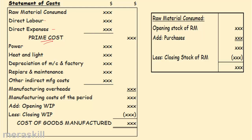Remember: direct material, labor, and expenses make your prime cost. All indirect costs are called overheads. Add manufacturing overheads to prime cost and you get the manufacturing cost of the period. Then add the opening work in progress and deduct the closing work in progress — what you get is the cost of the goods manufactured, not sold.